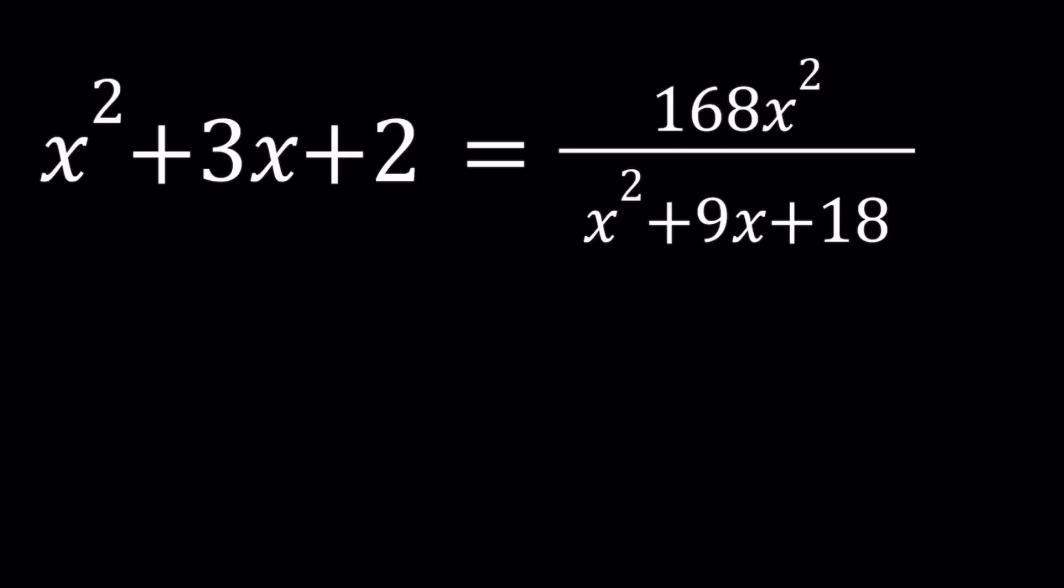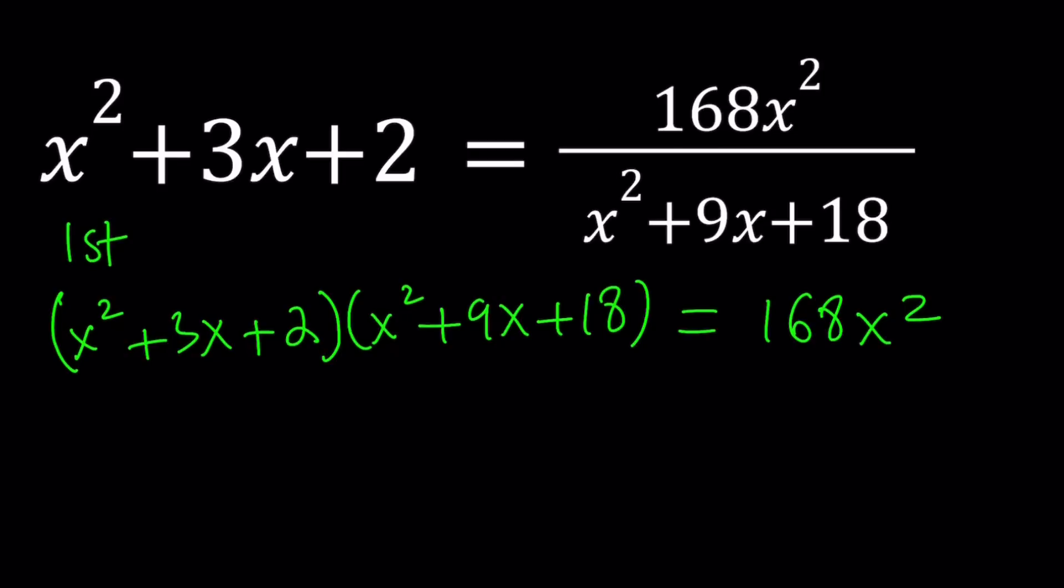So let's go ahead and do the cross multiplication first. If you cross multiply, you're going to get x squared plus 3x plus 2 multiplied by x squared plus 9x plus 18, and that gives us 168x squared. I want to talk about two different methods, even though the first method is just going to be brief. The second method will be complete.